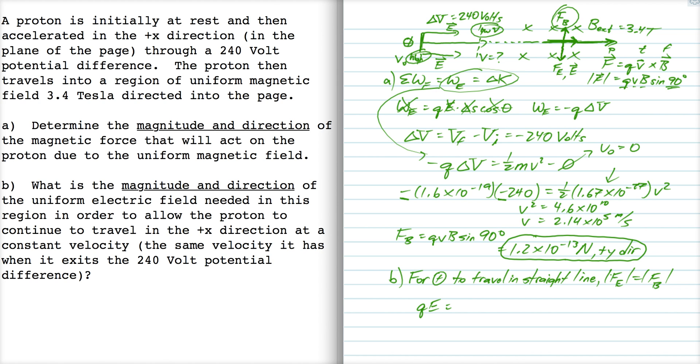So that means QE equals QVB, and E equals VB in this case because we're trying to find E. That's going to be 2.14 times 10 to the fifth multiplied by 3.4 Tesla. So that means the electric field is 7.3 times 10 to the fifth volts per meter, and it's directed in the minus Y direction.